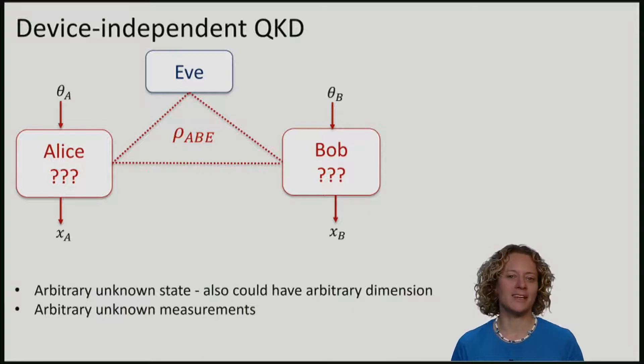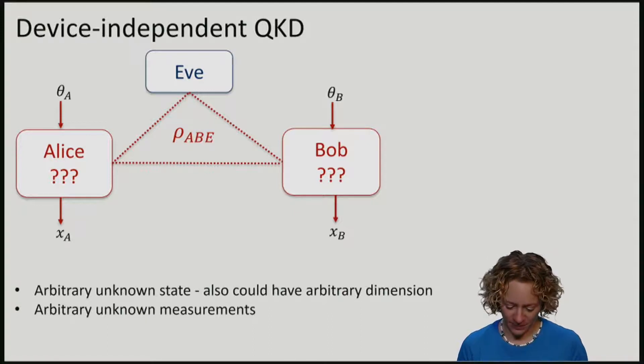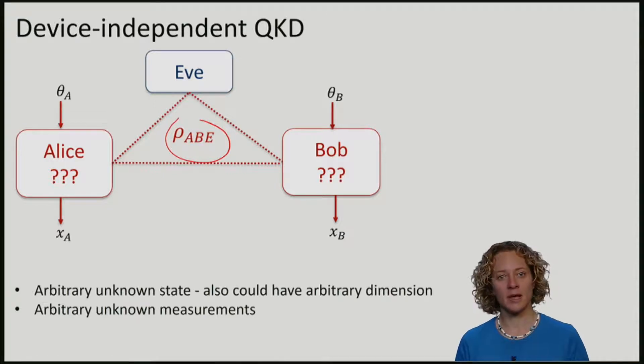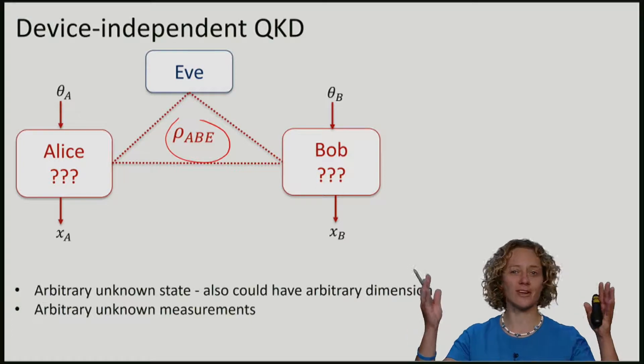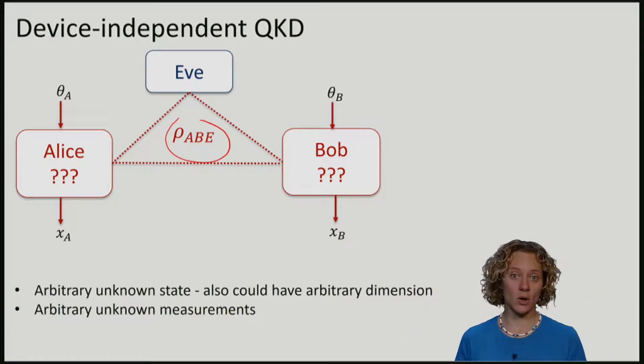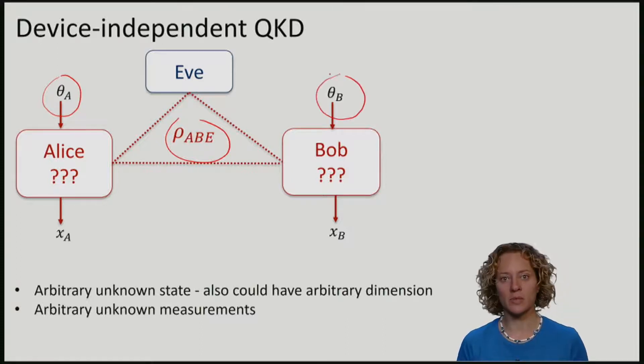Let me just summarize what this means for quantum key distribution. In device-independent QKD, we will start with a scenario where the state that Alice and Bob share is arbitrary. In particular, this means that Alice may not even have a qubit, but maybe the state rho A is a huge state that has a very large dimension. Also, we will think of Alice and Bob as just measurement boxes that take an input theta A and theta B for Bob, and produce measurement outcomes xa, xb. But the measurements inside can be arbitrary.